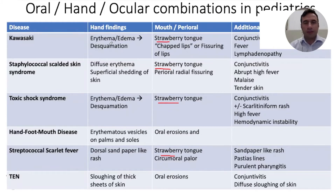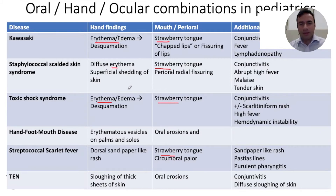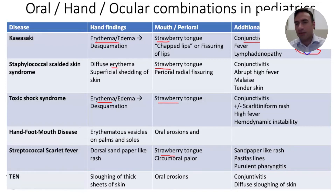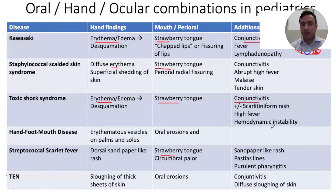Looking at Kawasaki disease specifically, another classic feature is erythema, edema, and late desquamation of the hands — but this is also found in toxic shock syndrome. Erythema without the swelling can be seen in staphylococcal scalded skin syndrome. Kawasaki disease also has conjunctivitis as a prominent feature, but classically with limbal sparing — a ring of sparing right around the iris — which is highly characteristic and helps distinguish it from toxic shock syndrome and TEN, both of which can also have conjunctivitis.